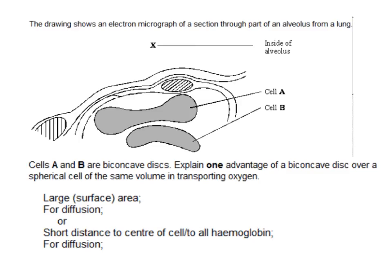Similarly, red blood cells: how are they adapted? They've got a biconcave disc shape - concave on both sides - which increases the surface area for diffusion. They're also thinner in the middle because they're biconcave, giving a shorter distance for diffusion. So two ways of using Fick's Law which make red blood cells good at their job.